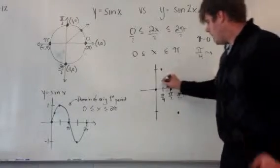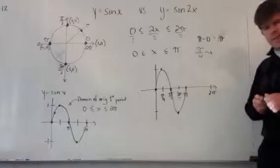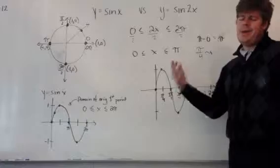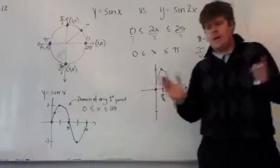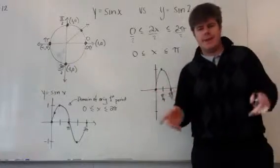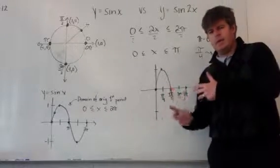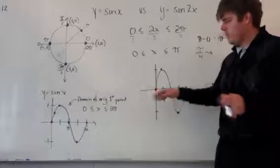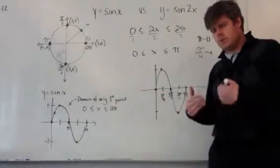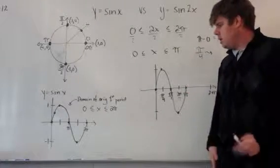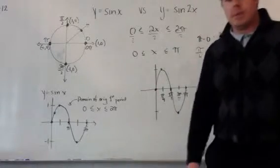What we essentially have is the same sine curve compressed over a shorter domain. That's really what altering the period means — changing the input length it takes to complete one sine curve. If you have any questions, don't hesitate to send a comment and I'll do my best to answer it.